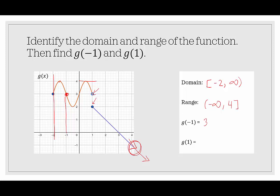For g of 1, it looks like there are two points, but remember this is a function — we can't have two outputs. The upper point is an open circle, so it's not included. We only use the included point, which is 1 comma 2. So x is 1 and g of x is 2, and g of 1 is 2.